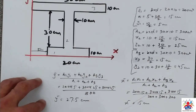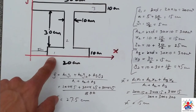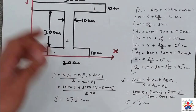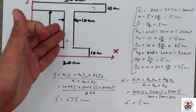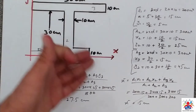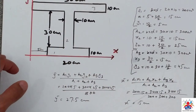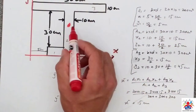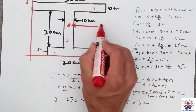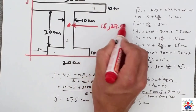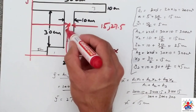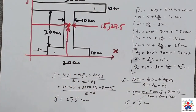So we travel from the bottom red line upwards 27.5 centimeters, and from the left red line to the center 15 centimeters. The center of gravity for this section is the point (15, 27.5) — this is where our section will be in the state of equilibrium. That's it for today, thank you for watching, please don't forget to subscribe.